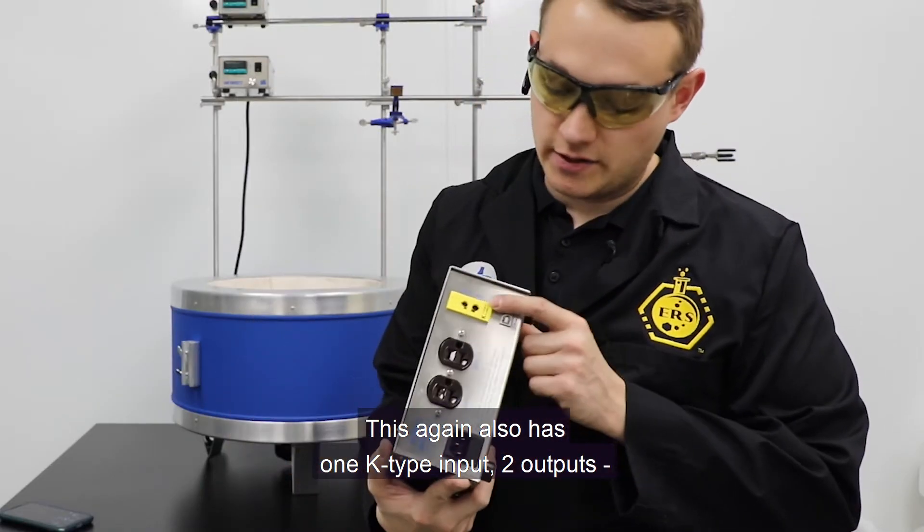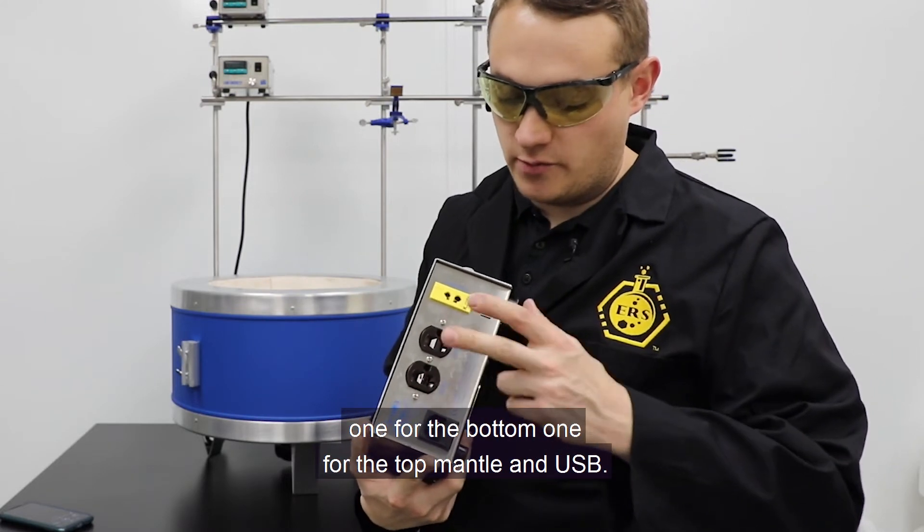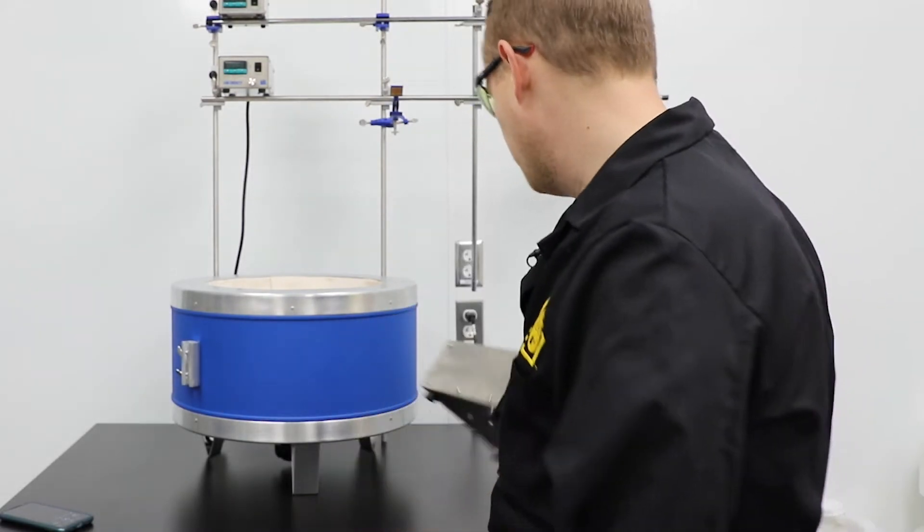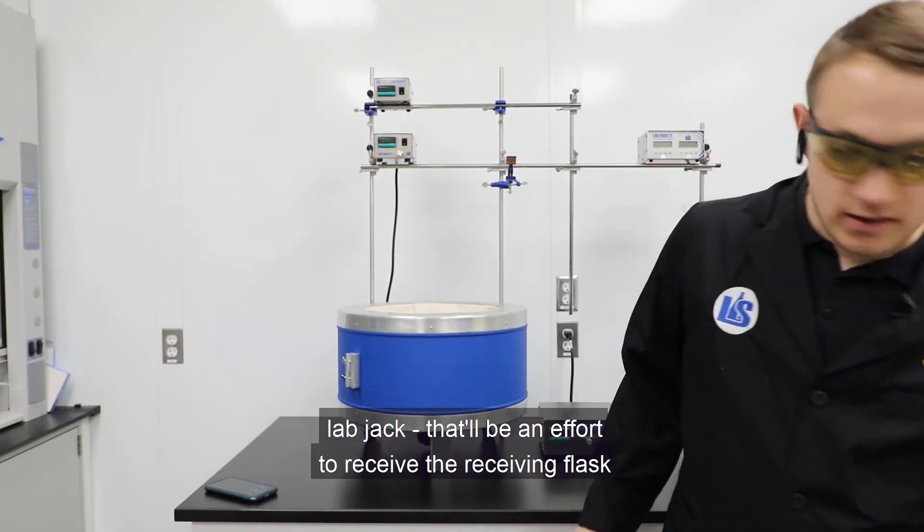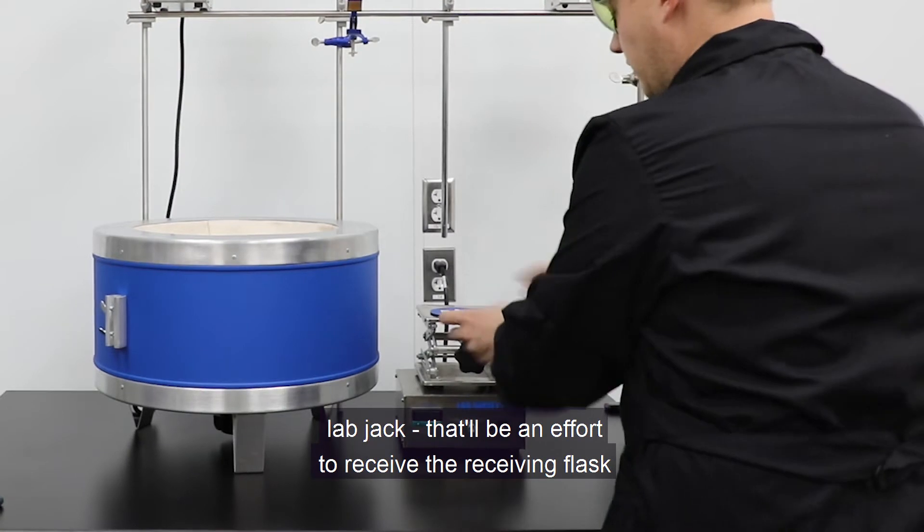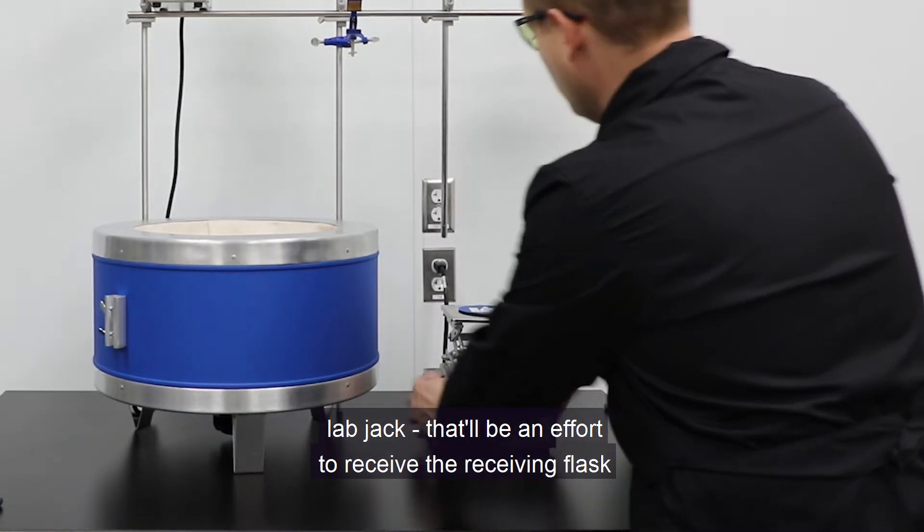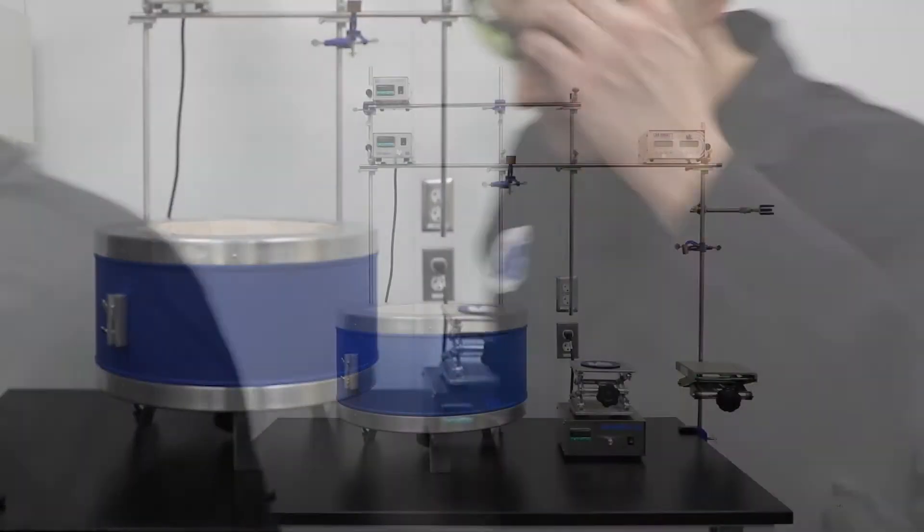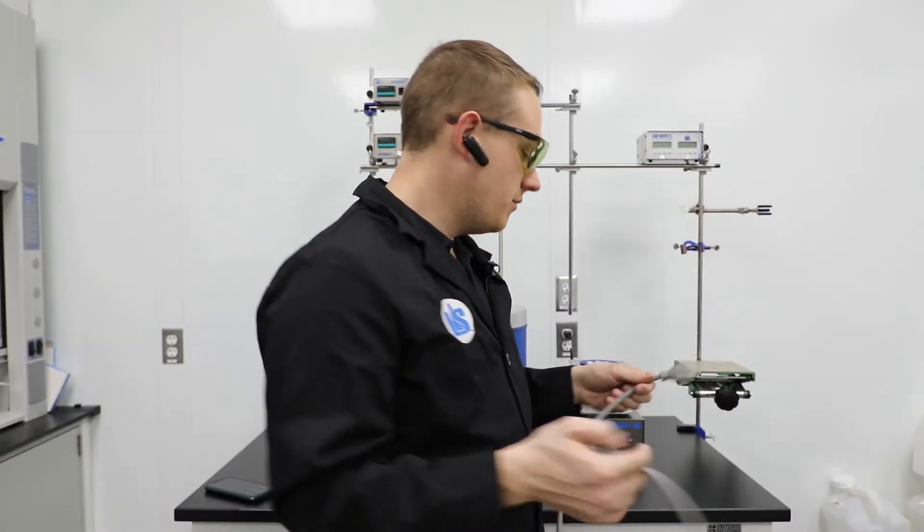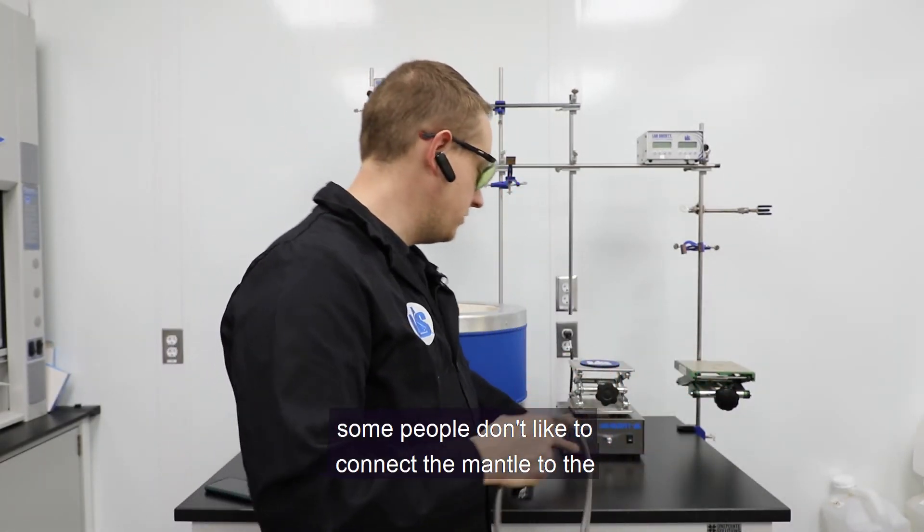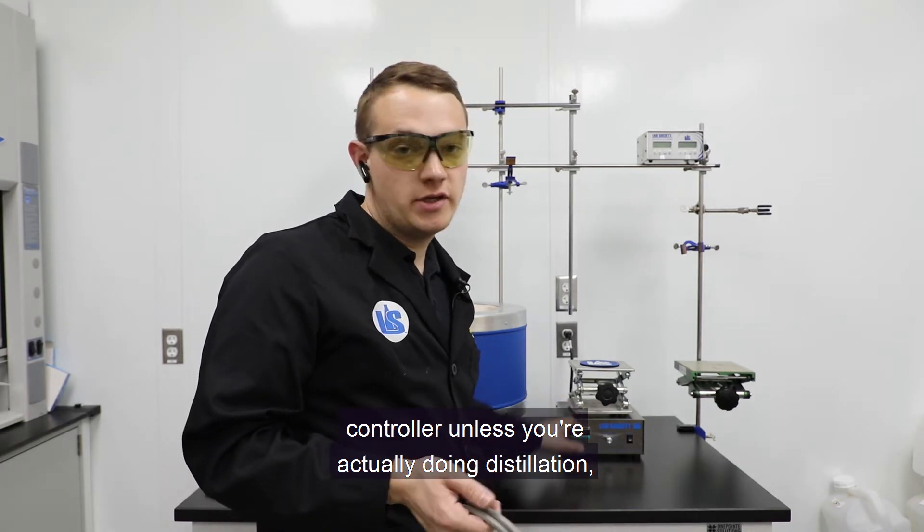So this, again, also has one K-type input, two outputs, one for the bottom, one for the top mantle, and USB. This is typically put right here so that I can actually put my lab jack on, and that will be in order to receive the receiving flask as it comes down. So my bottom mantle is going to be a twist lock connector. Some people don't like to connect the mantle to the controller unless you're actually doing the distillation, which makes a lot of sense.